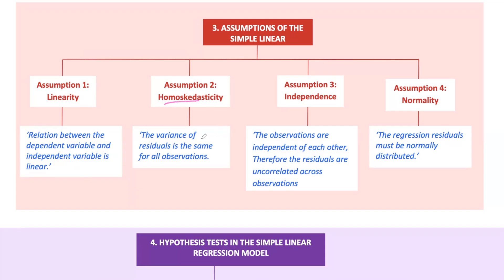Second is homoscedasticity. The variance of the error terms is constant across observations. This means that the spread of the errors is the same for all values of x. If this assumption is violated, we have heteroscedasticity, which can affect the reliability of our model.